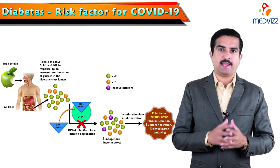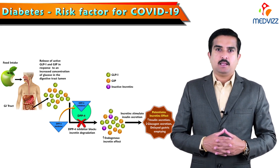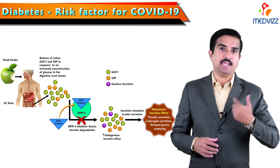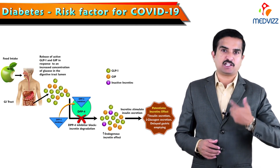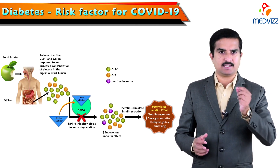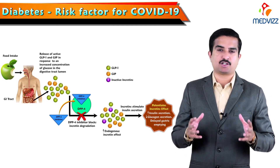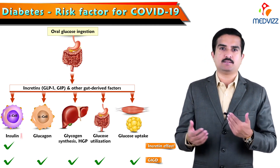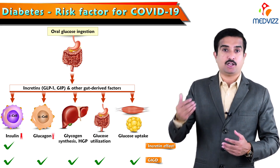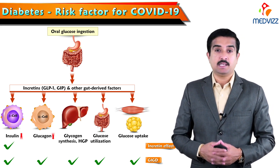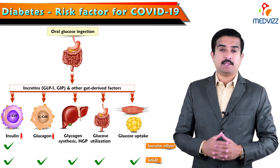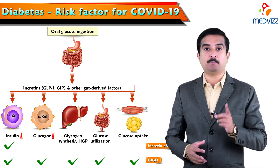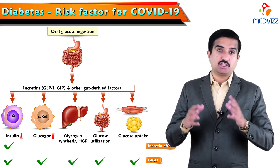Regarding the mechanism of action of DPP4 inhibitors, they indirectly increase the incretin effect. Incretin is a digestive tract hormone that increases insulin secretion from the beta cells of the pancreas, decreases glucagon levels, and slows gastric emptying in response to food intake. There are two major incretins: glucagon-like peptide 1, called GLP-1, and glucose-dependent insulinotropic peptide, called GIP.